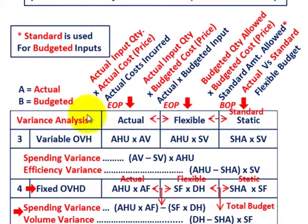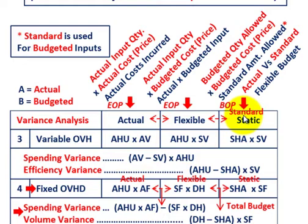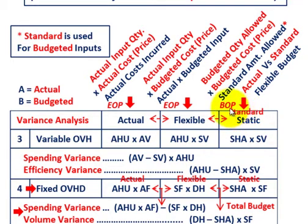When we're dealing with variance analysis, we're really looking at three different budgets or three different amounts. At the beginning of a period, you establish some standard or static amount for your budget. At the end of the period, you determine some actual amount. Between those two, you can determine your flexible budgeted amount.